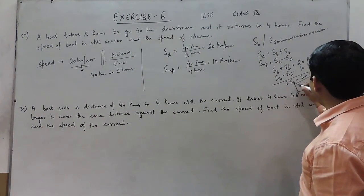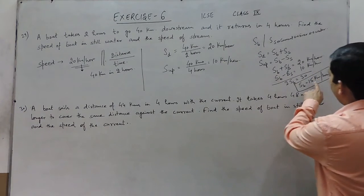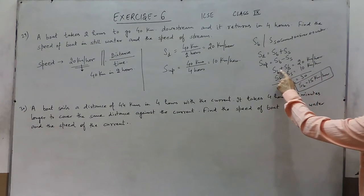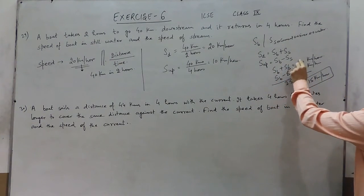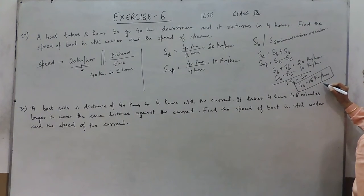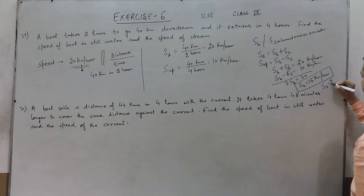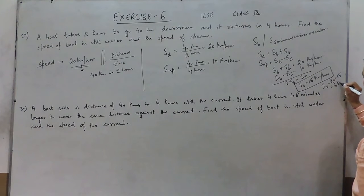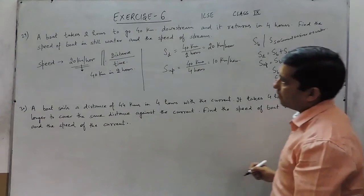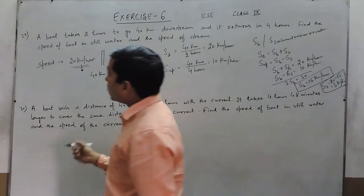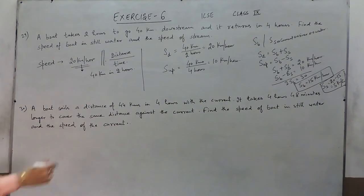Now that we have the speed of boat as 15 km per hour, if I put it in the first equation, then 15 plus speed of stream equals 20. So the speed of stream becomes 20 minus 15, which is 5 km per hour. This is how we solve question number 29.